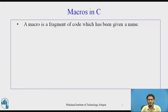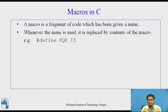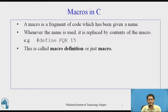What are macros in C? A macro is actually a fragment of code which has been given a particular name. So whenever that name is used, it is replaced by the contents of the macro. For example, `#define pqr 15` — here pqr is the macro and 15 is the value assigned to it. This is the macro definition.